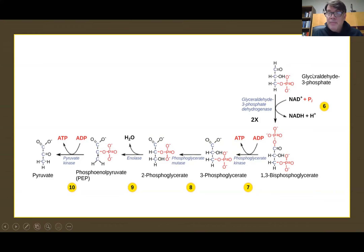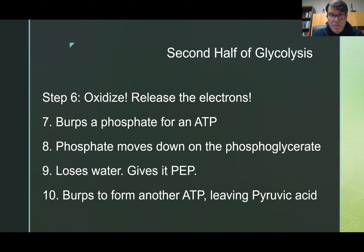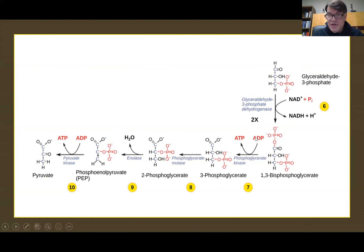So what happens here? Glyceraldehyde oxidizes, which means it loses electrons, which allows NAD+ to become NADH — which is energy. Then it burps a phosphate to make some ATP. Then a phosphate is going to move on the structure. Then it dehydrates, loses a water. Then burps off a phosphate and we end up with pyruvate.